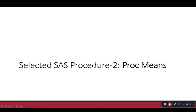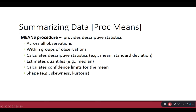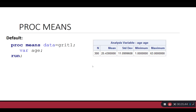Next up is the means procedure, PROC MEANS. It runs means or provides descriptive statistics — a mean is just an average. PROC MEANS can perform these descriptions across all observations or even within a group of observations. The descriptive statistics it calculates include the mean, the standard deviation, skewness and kurtosis, quantiles like the median, confidence limits, and much more — so it's a really flexible procedure. At its most basic, if we just say PROC MEANS data equals GRIT1 for the variable age, we'll get some default output.